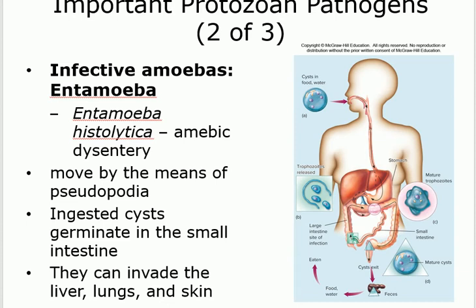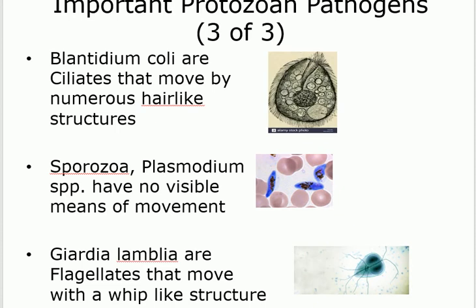Amoebic dysentery causes stomach problems similar to diarrhea or constipation. Most of the time the infection stays in the intestine, but in weak patients it can invade other organs like the liver and lungs. The third type of protozoa moves by cilia — hair-like structures. An example is Balantidium coli, which lives in the colon (hence the name). Remember it moves by cilia.